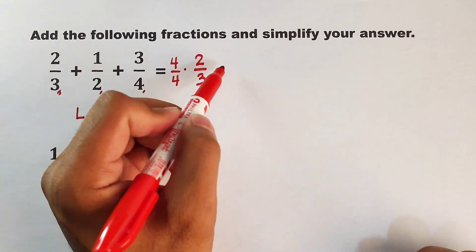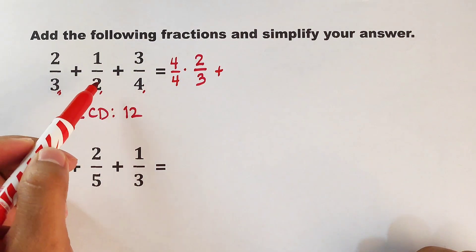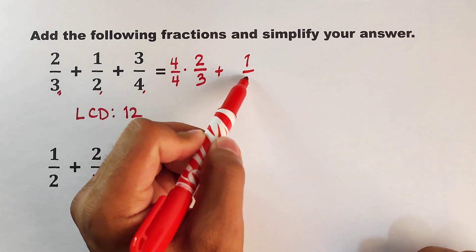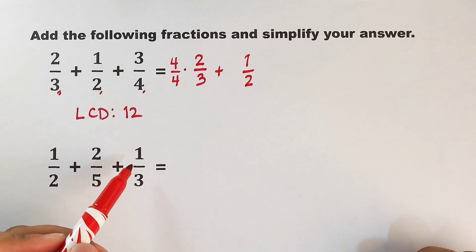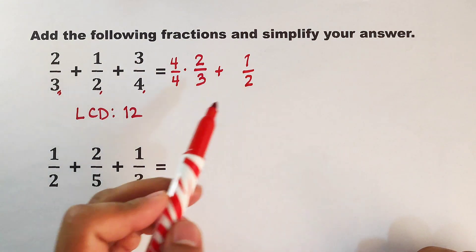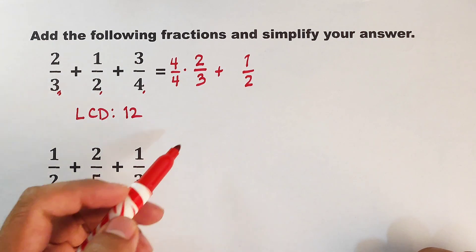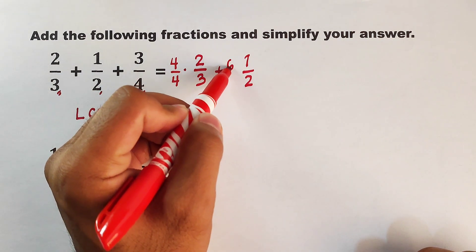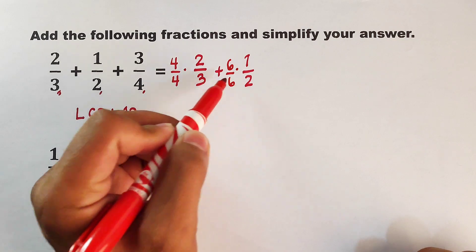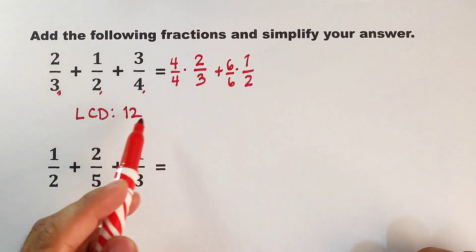Next we have this plus 1 half. So what are we going to multiply to make 2 become 12? The answer is 6. So we will multiply the whole fraction by 6 over 6 because 6 times 2 is 12.